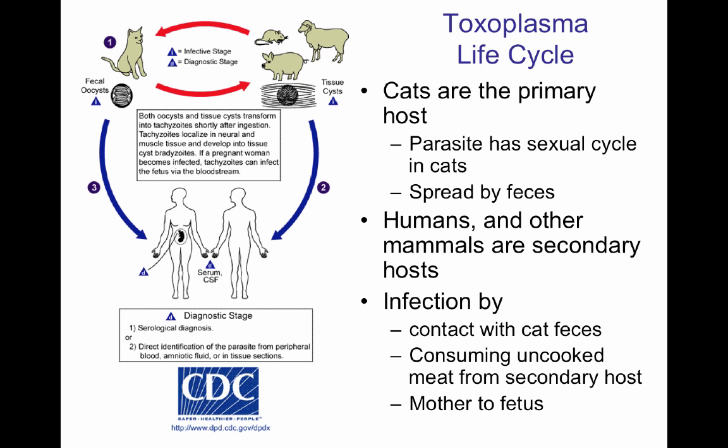Either through cat feces or consumption of uncooked meat, a person can get Toxoplasma. A third mechanism of infection is mother-to-fetus transfer, which can lead to the fetus dying. This is one of the main reasons why pregnant women are counseled against cleaning the kitty litter if they have cats, because of the potential for Toxoplasma infection.